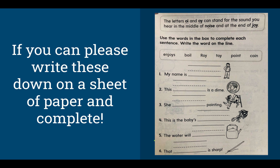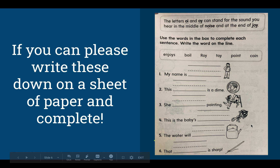Now on a sheet of paper, try and complete this sheet. You are going to use the words in the box to complete each sentence and write the word on the line. Let's look at the words: enjoys, boil, Roy, toy, point, and coin. Do numbers one through six. If you can, have your parents send me a picture on Class Dojo so I can see if you are doing your work.